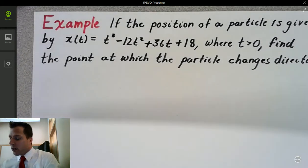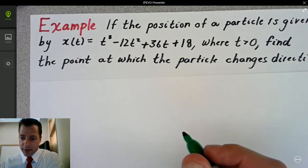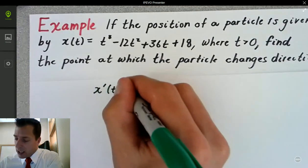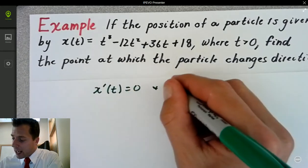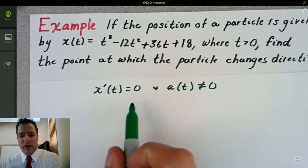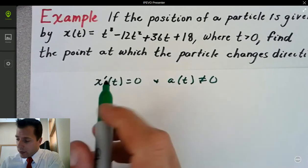We're going to need a couple things to help us out. Now we know that a particle changes direction if x prime of t equals 0 and a of t does not equal 0. So we're actually going to be using the first and second derivative to help us out here.